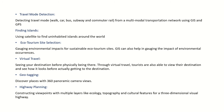Finding islands uses satellites to find uninhabited islands around the world. Ecotourism site selection gauges environmental impact for sustainable ecotourism sites and helps assess the impact of environmental occurrences. Virtual travel allows tourists to see their destination before physically being there. Geotagging enables discovery of places with a 360-degree panoramic camera view. Highway planning constructs a viewpoint with multiple layers like ecology, topography, and cultural features for a three-dimensional visual highway.